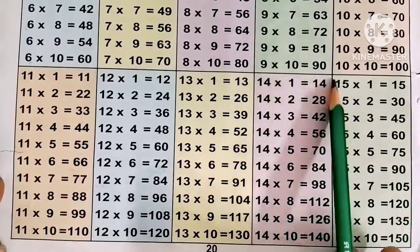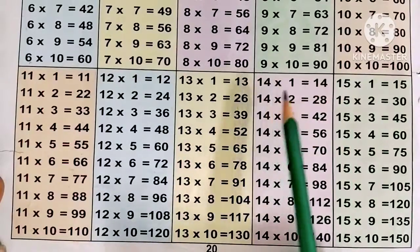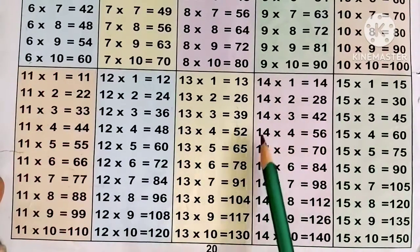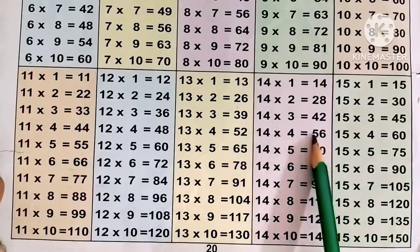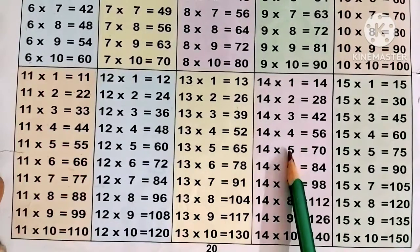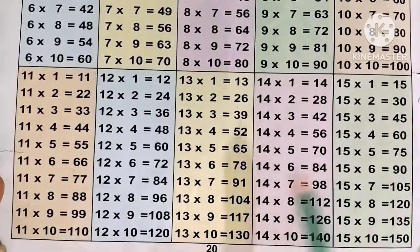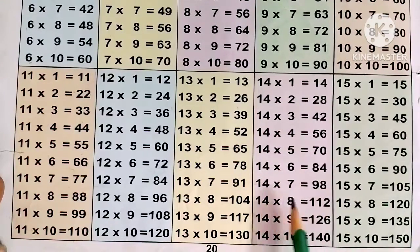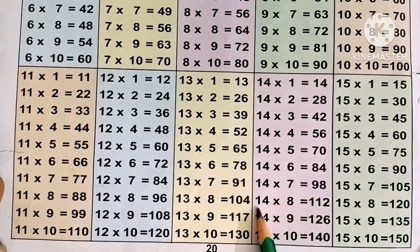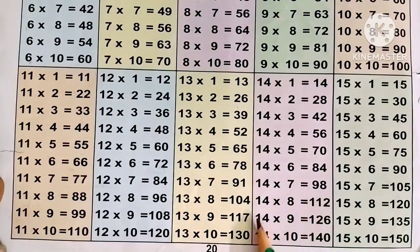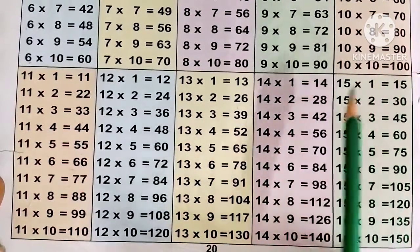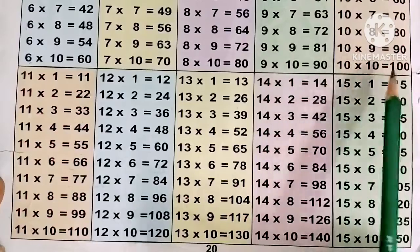Now the 14 times table. 14 ones are 14, 14 twos are 28, 14 threes are 42, 14 fours are 56, 14 fives are 70, 14 sixes are 84, 14 sevens are 98, 14 eights are 112, 14 nines are 126, 14 tens are 140.